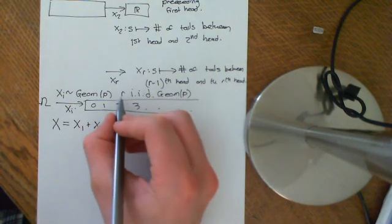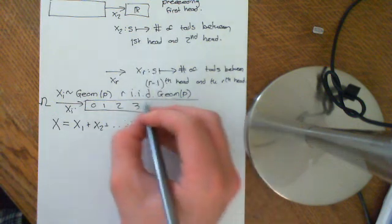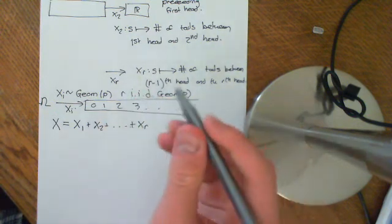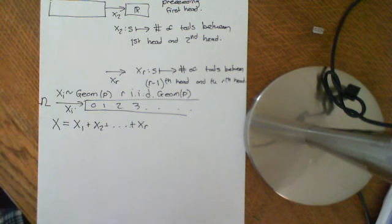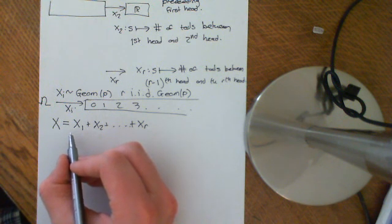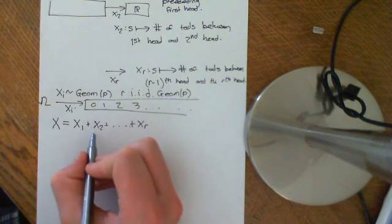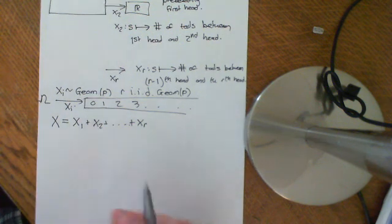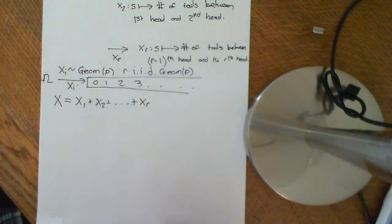So that's the way of viewing the negative binomial distribution: it is the sum of r IID geometric distributions with parameter p. And the reason they're independent, intuitively, is because the number of tails preceding your first head does not affect the number of tails between the first and second head. They are completely independent, and that intuitive concept of independence is what is mirrored in the formal definition of independence.